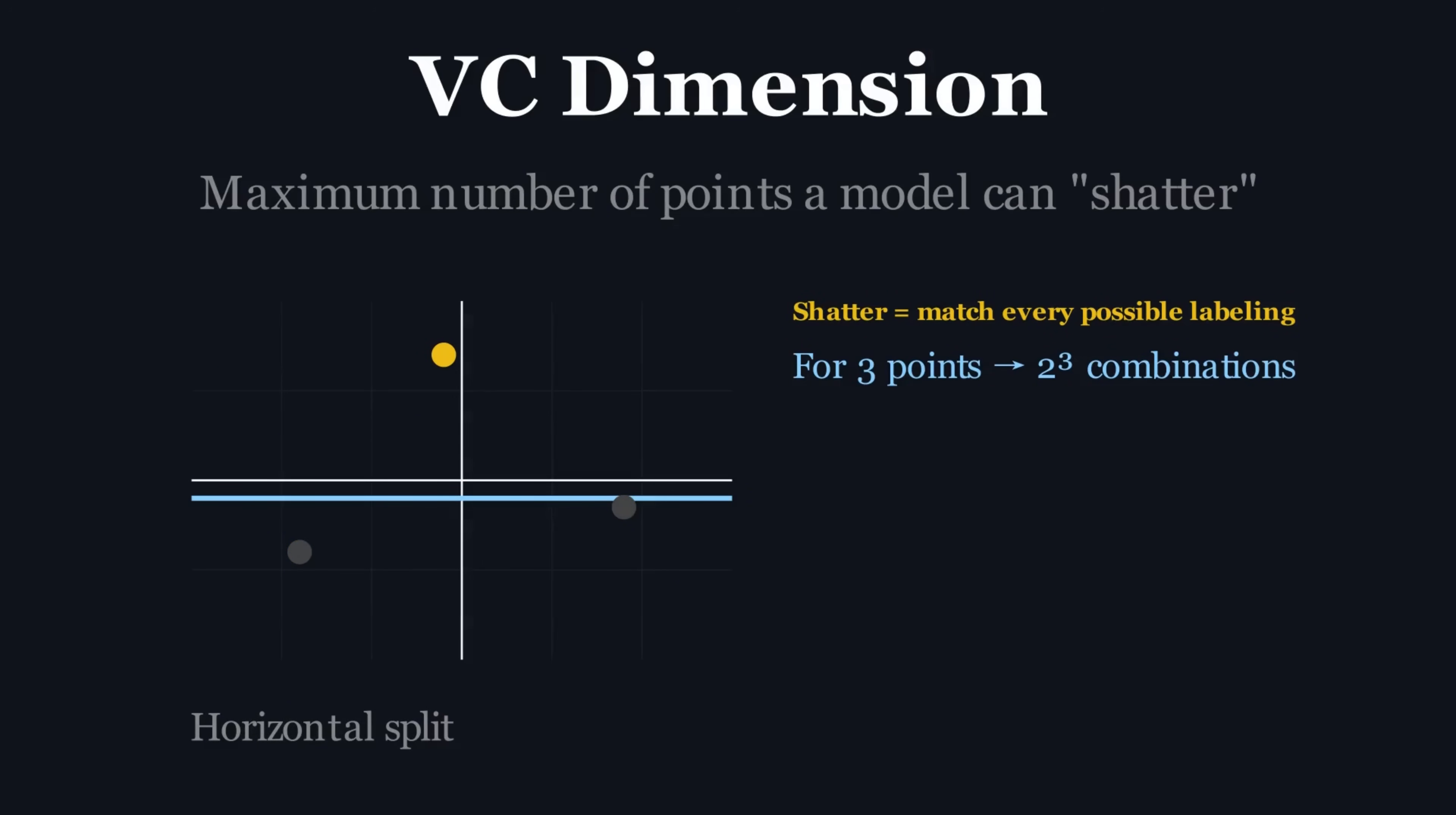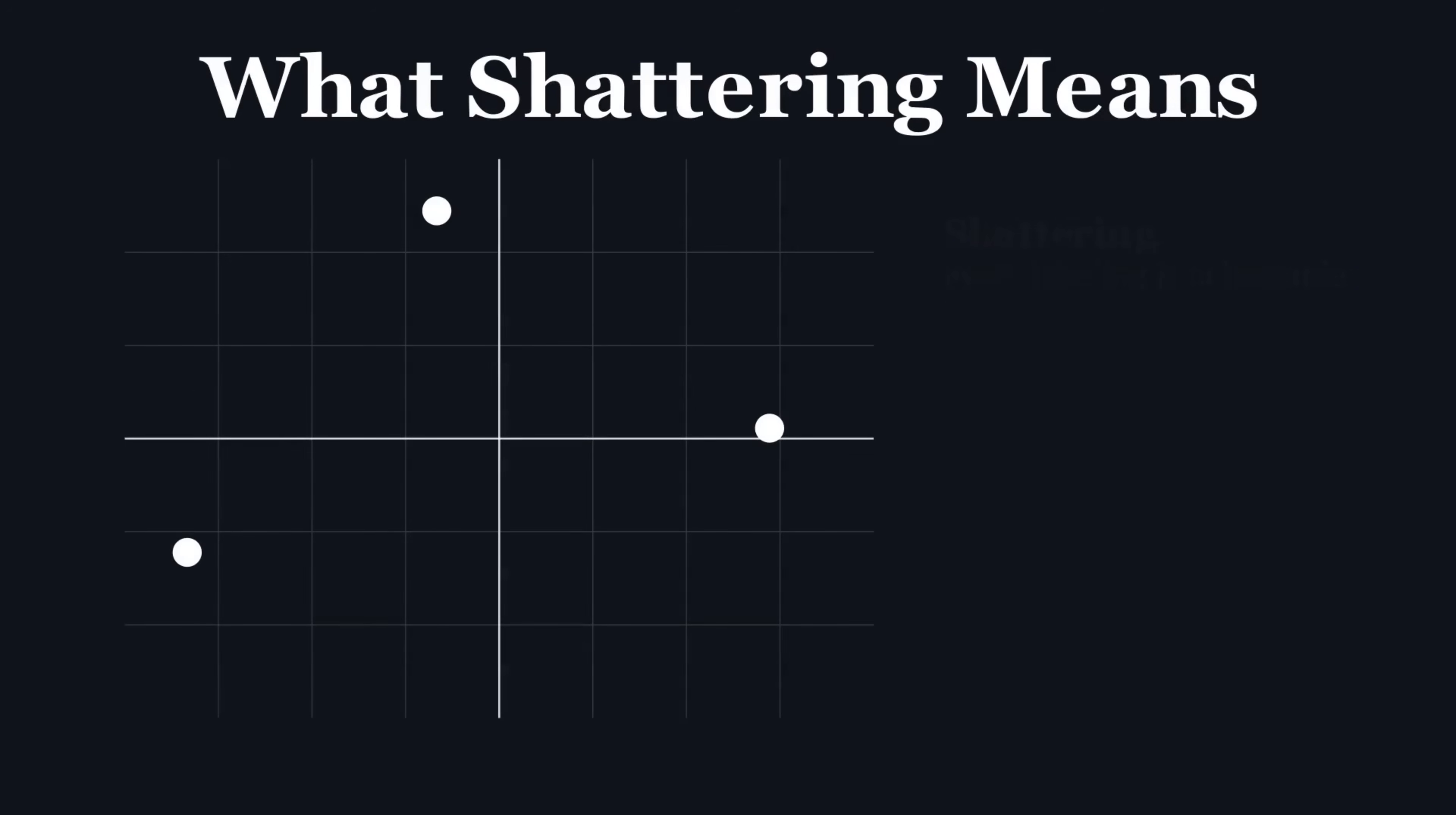Imagine you have a set of data points. A model's VC dimension is the maximum number of points it can shatter. Shattering means that for any possible way you label those points, say, red or blue, the model can draw a boundary that perfectly separates them.